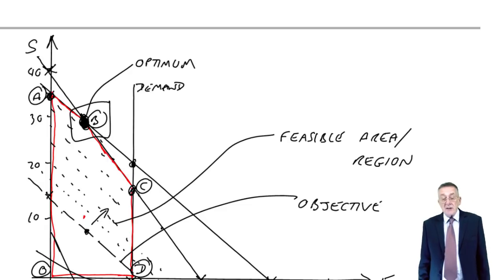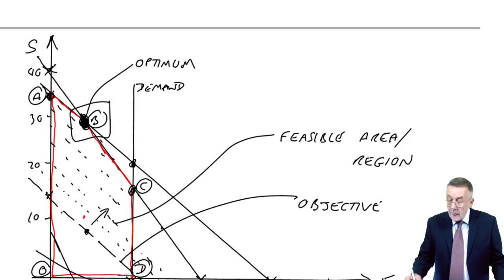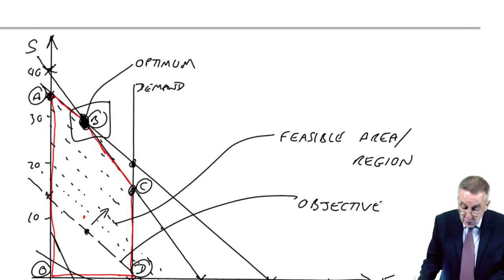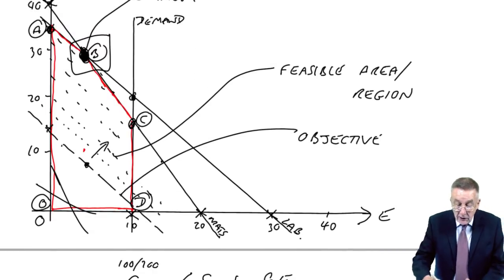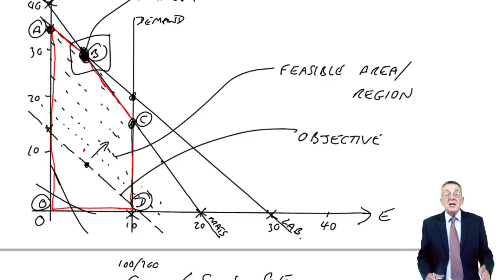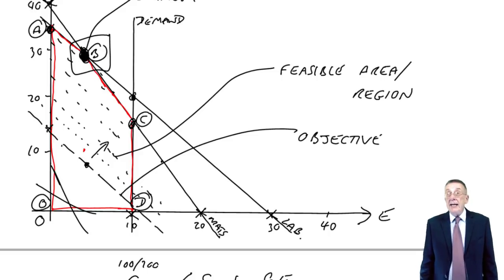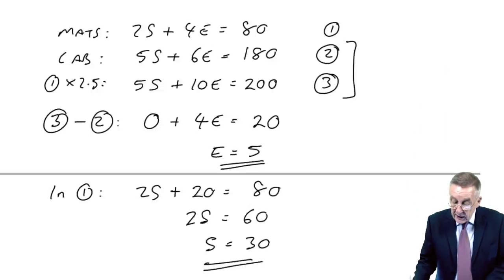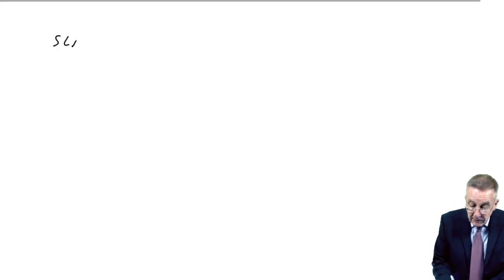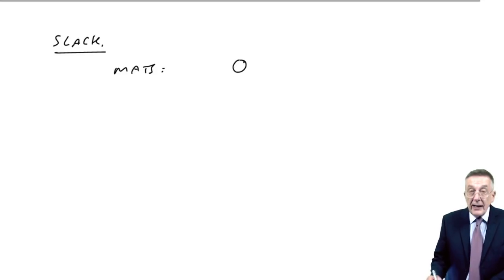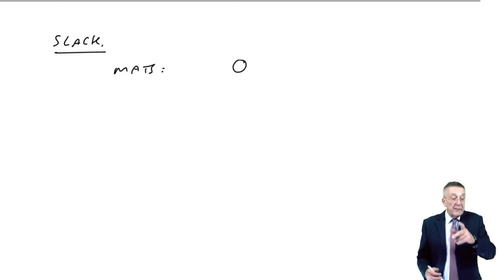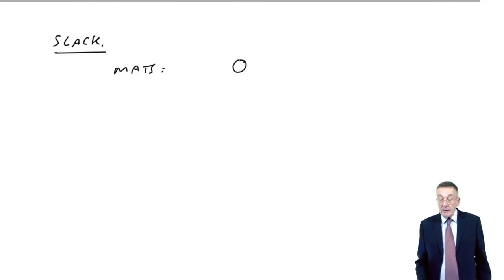Are we using all the materials available at point B? Yes, we are. And why? How do I know? Because we're on the materials line. If we're on the materials line, we are using all 80 kilos. So for materials, the slack therefore is zero. If we're 80 available, we're using 80, no spare.